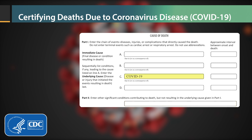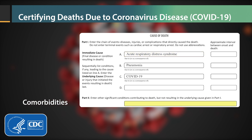If COVID-19 is determined to be the underlying cause, it should be reported on the lowest line used in Part 1, with any conditions to which it gave rise — such as pneumonia or respiratory distress — in a logical sequence on the lines above. Comorbidities that contributed to death, such as COPD or hypertension, should go in Part 2.